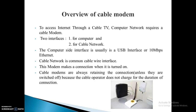To access the internet through a cable TV, a computer network requires a cable modem. It has two interfaces: one for the computer and one for the cable network. The computer side interface is usually a USB interface or 10 Mbps Ethernet. The cable network side uses a common coaxial cable wire interface. This modem makes a connection when it is turned on, and cable modems are always retaining the connection because the cable operator does not charge for the duration of connection unless they are switched off.